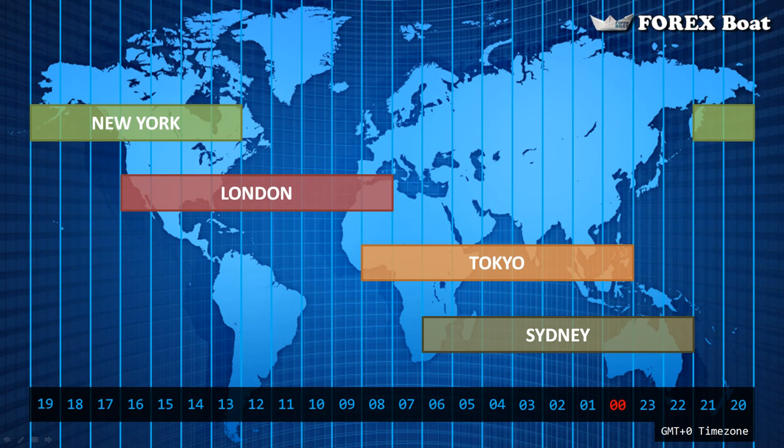New York and London are two of the world's biggest financial centers, and the American session starts when the European session is only halfway through. Just like putting more firewood into a fire, you get an extremely fast-paced and volatile market during that overlap. A lot of the major pairs like the euro/dollar, pound/dollar, and dollar/Swiss franc experience massive movements and specific patterns during this time.